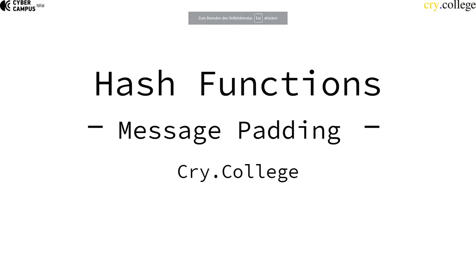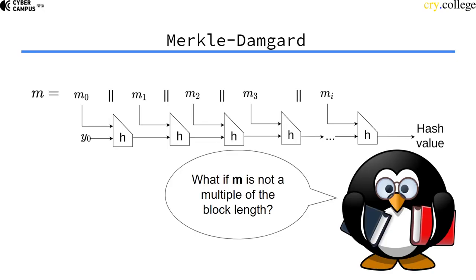With Merkle-Damgård, we have a way of dealing with variable-sized inputs into compression functions. Another problem we might run into is: what if the thing we want to hash — the message — is not a multiple of the block length? What do we do then?